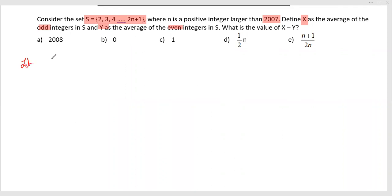Let me consider S equals 2, 3, 4, 5, 6, 7. What would be considered as X at that time? X, which is the average of the odd integers - that means 3, 5, 7 - should be equal to 5. And what is the gap? X minus Y should be equal to 1.